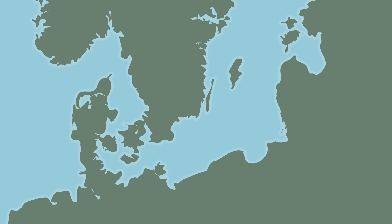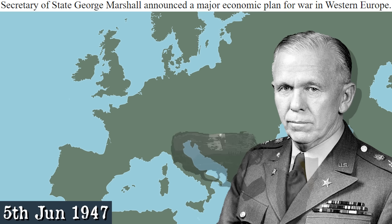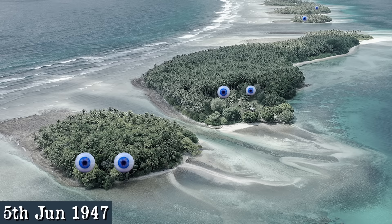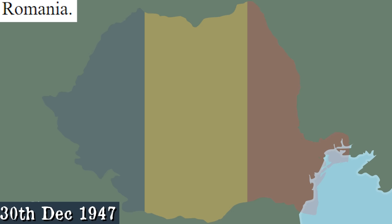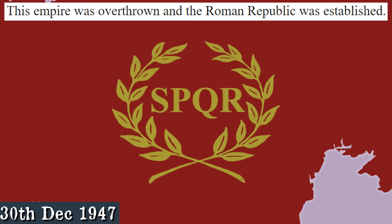Bo-Russia. On June 5th, Secretary of State George Marshall announces a major economic plan for war in Western Europe. This is the world through the eyes of the Marshall Islands. The islands have eyes. December 30th: Romania. King Michael defeated Ajir Georgios Dai. This empire was overthrown and the Roman Republic was established.